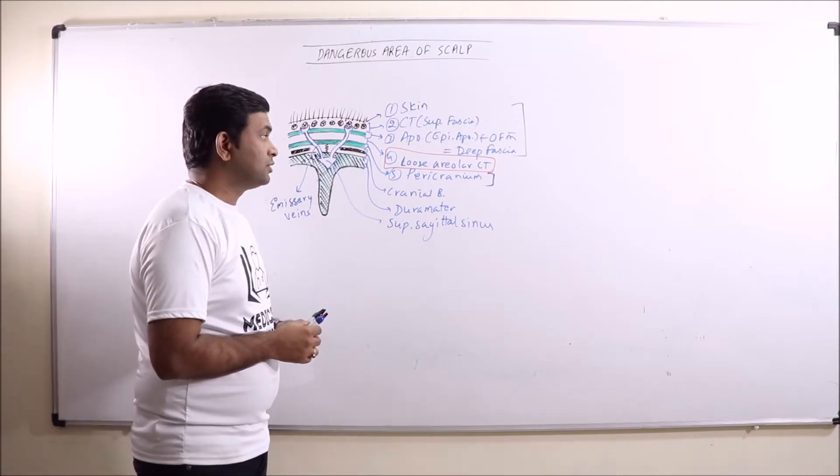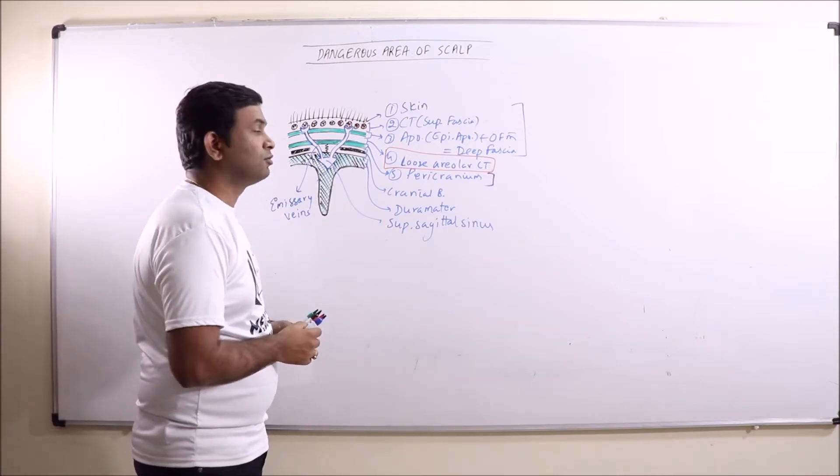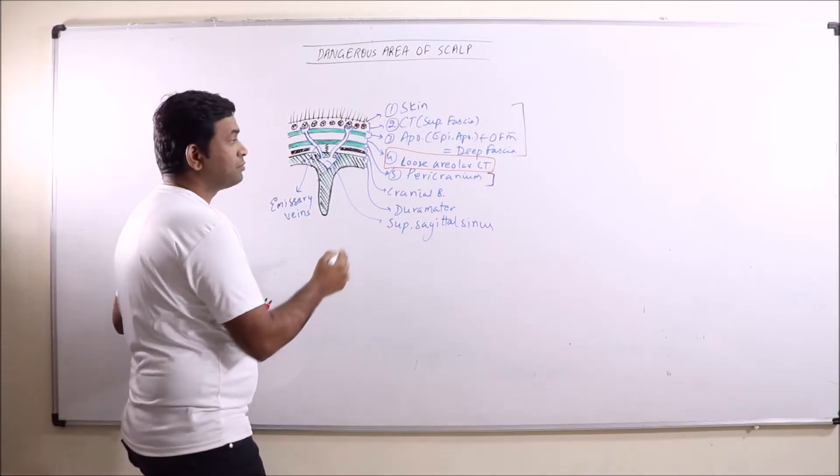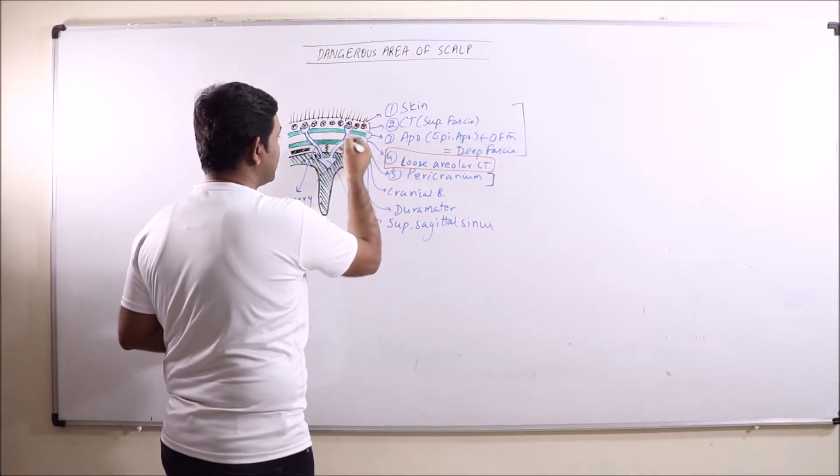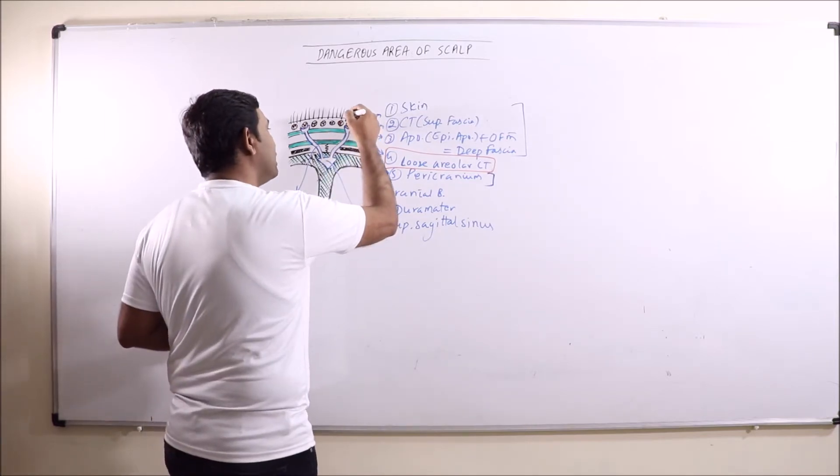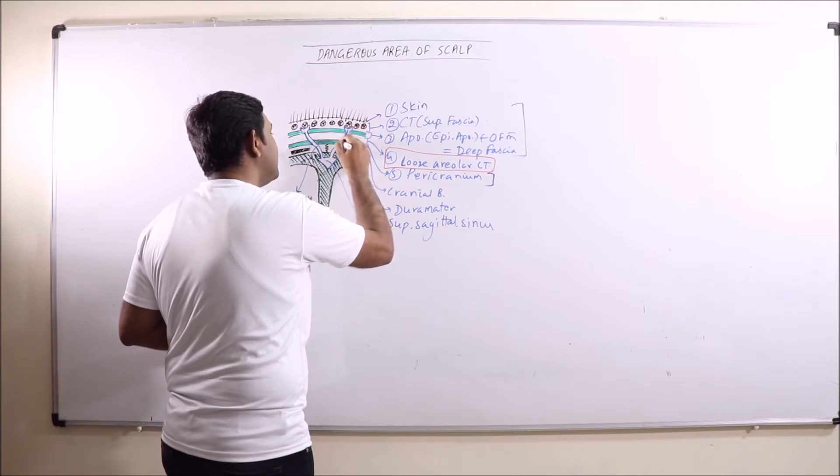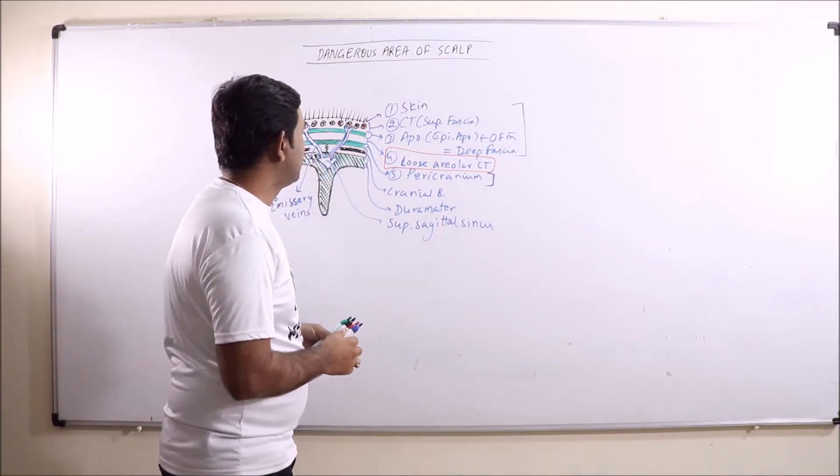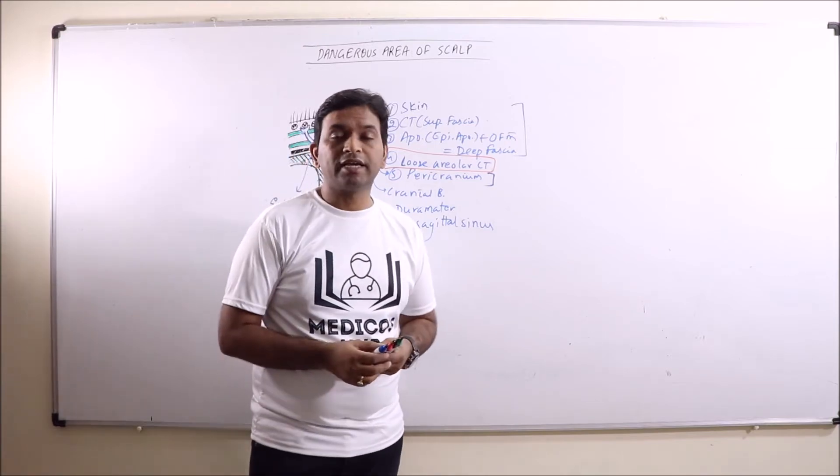In scalping, scalp is removed through this layer only. But it is also important that it possesses the emissary veins. Emissary veins pass through it and via these emissary veins the infection in the upper layers can easily enter the cranial cavity. So this is known as dangerous area of scalp.